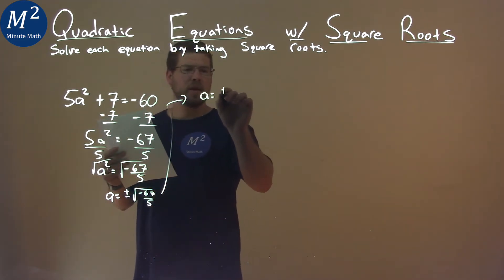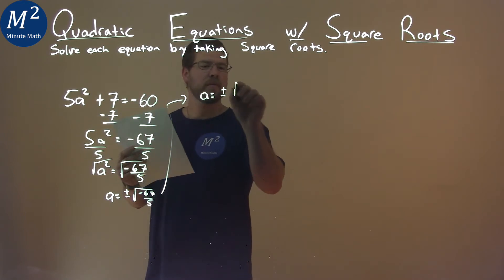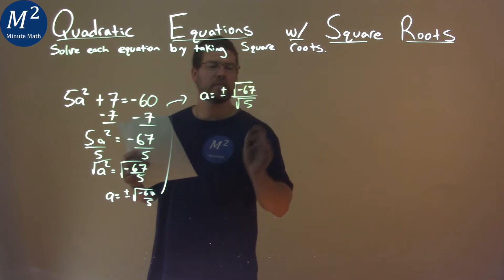Well, a equals plus or minus the square root of the fraction. We take the square root of the numerator, negative 67, over the square root of the denominator, which is 5.